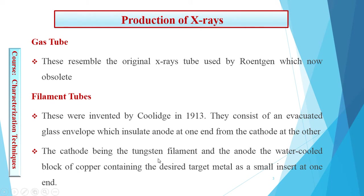The cathode is the tungsten filament. We use tungsten as the source of electrons because tungsten is a high-resistive material with a very high melting point. The anode is a water-cooled block of copper containing the desired target metal as a small insert at one end, and this copper target is placed on the anode.